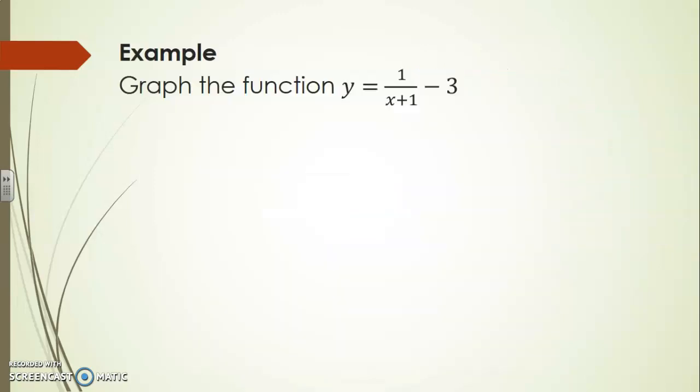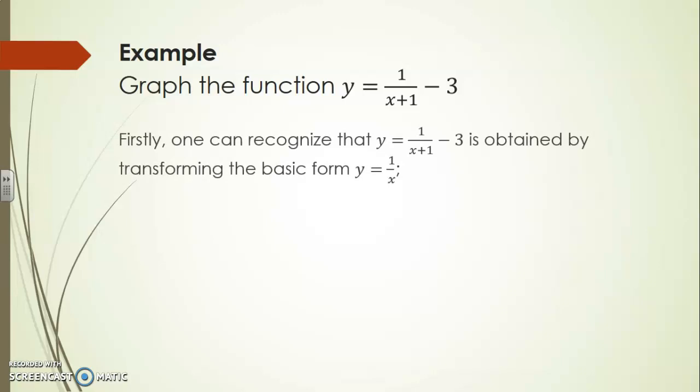So let's graph the function y equals 1 over x plus 1 minus 3. Again it's a question of recognizing which of our basic functions can be associated to this one we're trying to graph. You can recognize that y equals 1 over x plus 1 minus 3 is obtained by transforming the basic form y equals 1 over x.